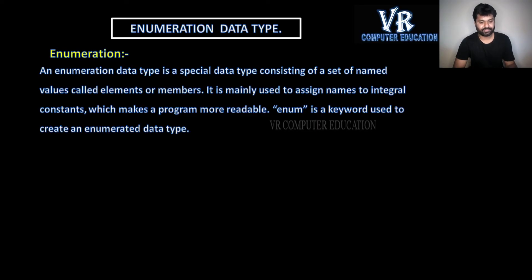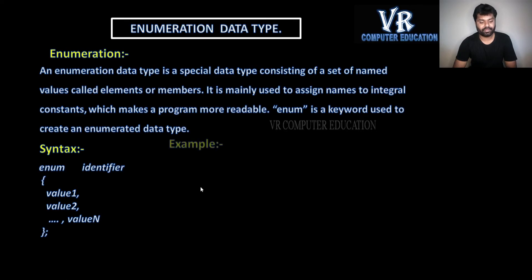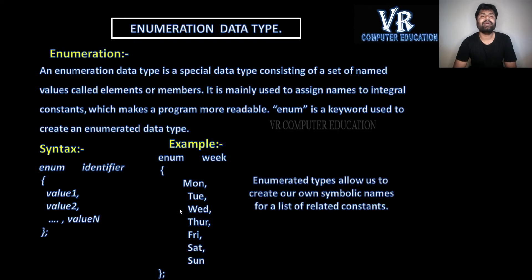An enumeration data type is a special data type consisting of a set of named values called elements or members. It is mainly used to assign names to integral constants, which makes a program more readable. The enum keyword is used to create an enumerated data type.